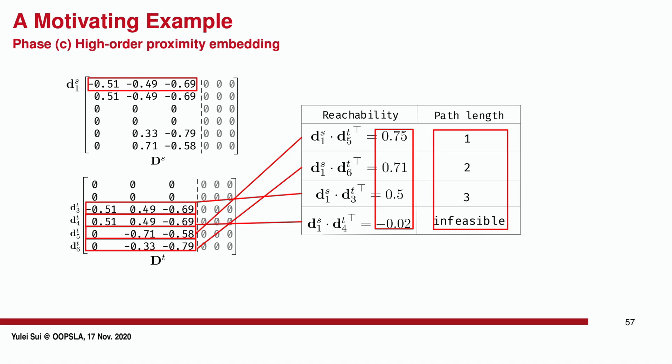The path from L1 to L5 is the shortest, with the largest proximity value. The path from L1 to L6 and the path from L1 to L3 are also successfully preserved with lower values. The infeasible path from L1 to L4 is also identified with a negative value, which means Q never refers to the stack object.